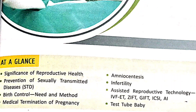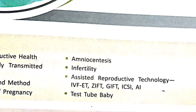In the video, we talk about the significance of reproductive health. Reproductive health is the role of human life. Prevention of Sexually Transmitted Disease is a simple concept. Topics include: sexually transmitted diseases, birth control - need of method, medical termination of pregnancy, birth control pills, physical method, chemical method - different methods and examples. Amniocentesis is one of the most important - definition and figure required.